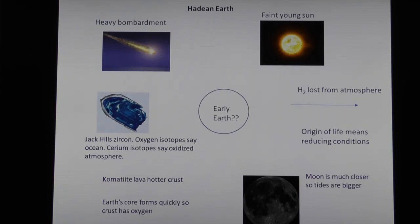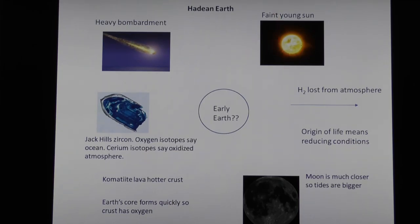The Hadean Earth is the geologic period when the earth first formed — the first few hundred million years. By definition, there are no rocks from that period, so there's not a lot of evidence of what happened. But there are certain things we know for sure. This is when most people think life originated. The sun was faint, so other things being equal, there would be ice on the surface of the earth — if there was water, it would probably be frozen.